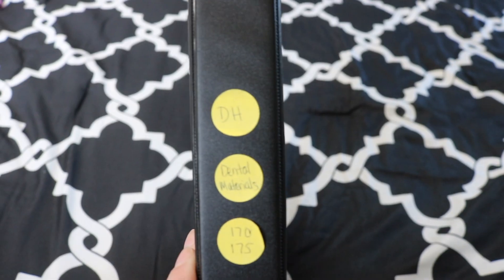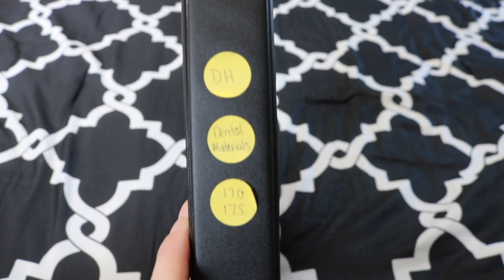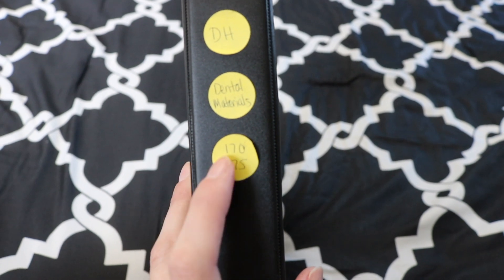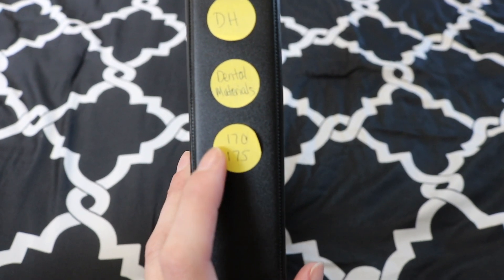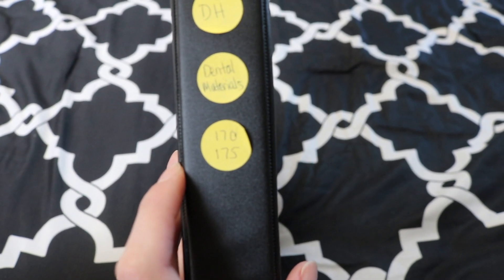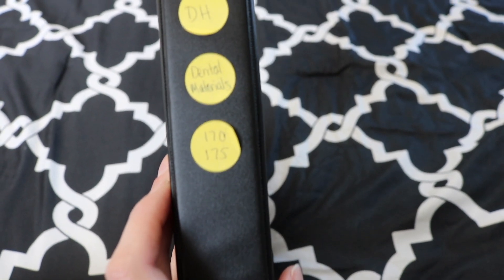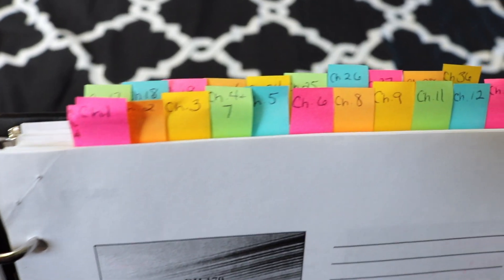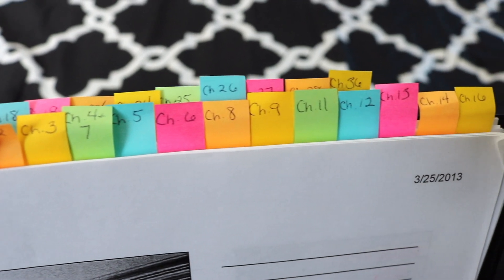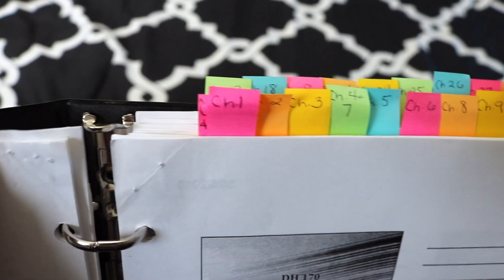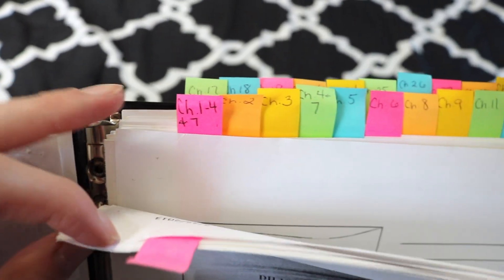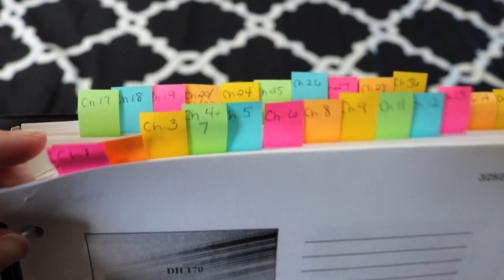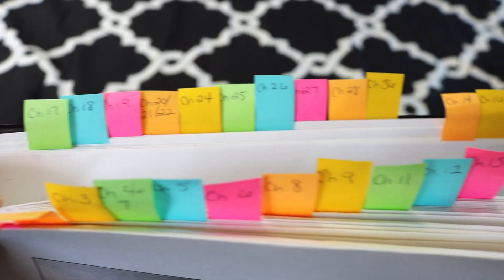As usual I have a binder for this course. So I have written that it was a dental hygiene course, the name of the course, and for this class there was actually two different classes for it. We had the main lecture course and then we also had a lab for it as well. I have a color coded tab system for every single chapter. I do this with all of my binders so that if I want to go back and reference something it is so much easier for me to find exactly what I'm looking for.